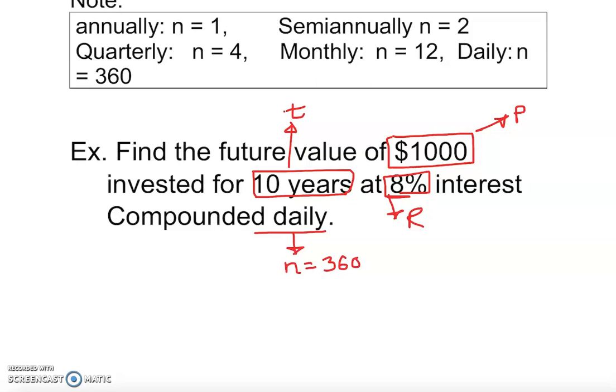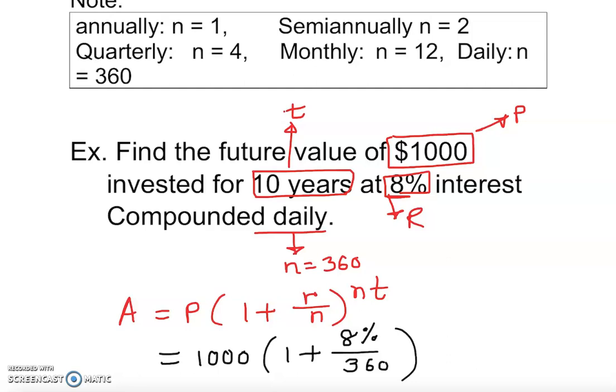What is the formula? A equals P open parenthesis one plus r over n, close parenthesis, to the power n times t. All we do is plug things in. P in this case is one thousand dollars, open parenthesis one plus r - r is eight percent - over n, which is 360, to the power 360 times t. Remember this is n times t, so 360 times ten years.